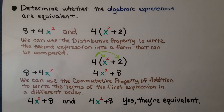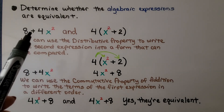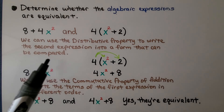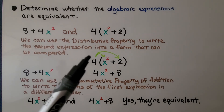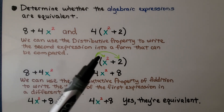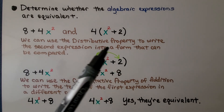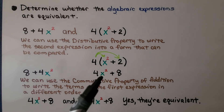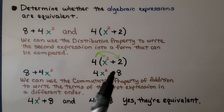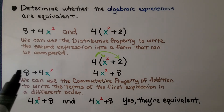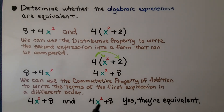Again, we need to determine whether these algebraic expressions are equivalent. We can use the distributive property to write the second expression into a comparable form: 4 times x squared plus 4 times 2, giving us 4x squared plus 8. The first expression is 8 plus 4x squared — it's in a different order. Using the commutative property of addition to reorder terms, yes, they are equivalent.